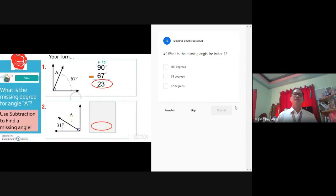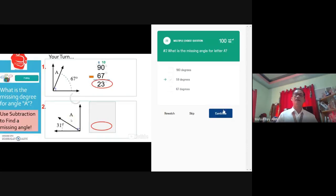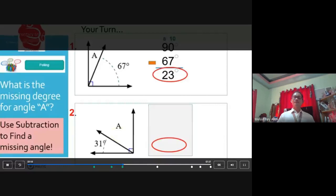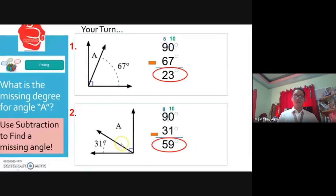Question number three. What is the missing angle for letter A? Choices 180 degrees, 59 degrees for a second choice, third choice is 67 degrees. The answer is 59, so let's submit. Okay, there you go. Check. Then press continue. Again, it's a 90 degree angle altogether, so you're going to take 90 degrees minus 31 degrees to find that missing angle of 59 degrees. Nice job.